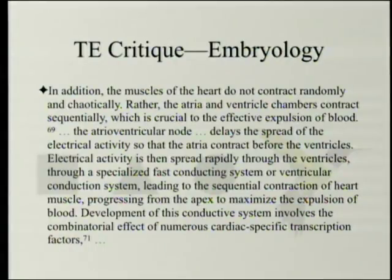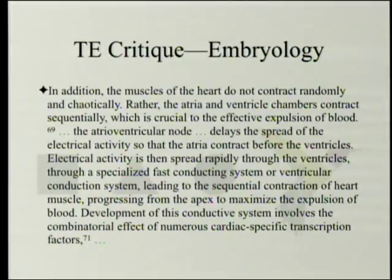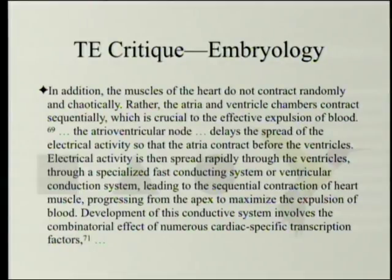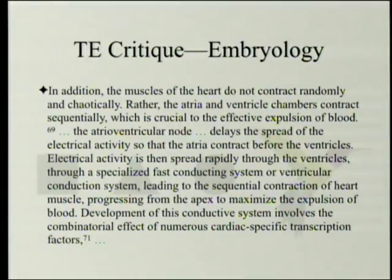In addition, the muscles of the heart do not contract randomly and chaotically. Rather, the atrium and ventricle chambers contract sequentially, which is crucial to the effective expulsion of blood. There is the movement of the electrical impulse over the atria, the atrioventricular node which delays electrical activity so the atria contract before the ventricles, and then electrical activity is spread rapidly through the ventricles via a specialized ventricular conducting system — leading to sequential contraction of heart muscle progressing from the apex to maximize expulsion of blood. When this system fails and conduction spreads only through the heart muscle itself, you lose a good share of contractility.